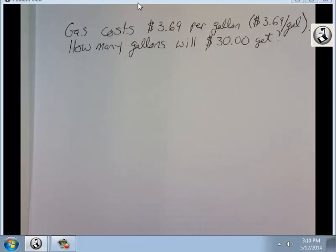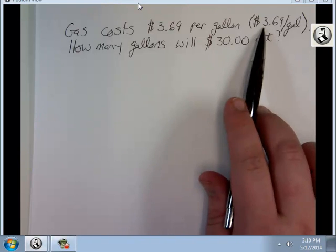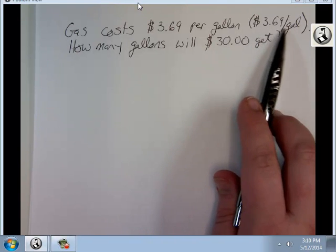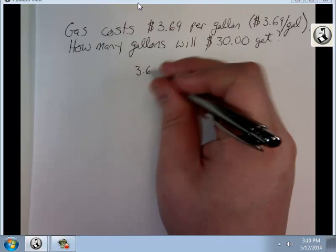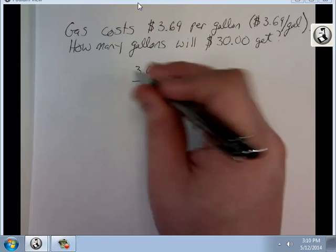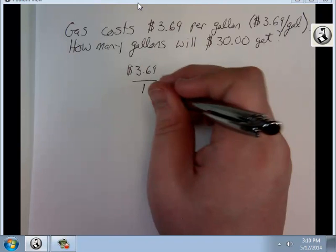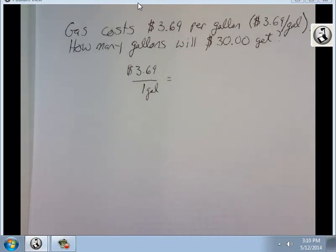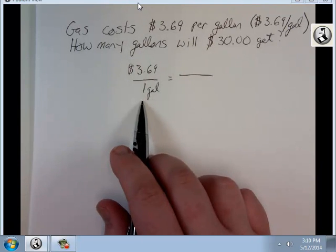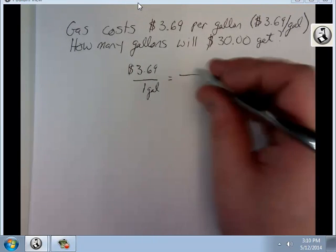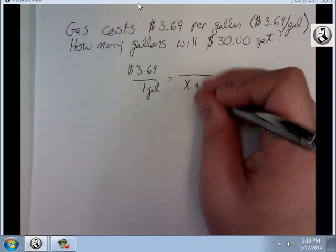Here's my main ratio. So I know it's $3.69 for every one gallon. This is dollars. This is gallons. Equals. Since I have my gallons as a denominator here, I've got to have gallons here. X gallons. And on the top I'm going to have $30.